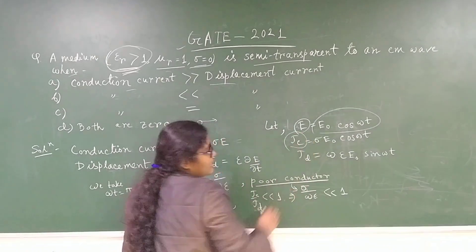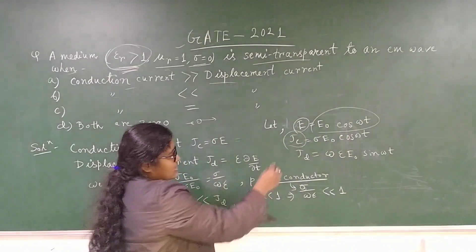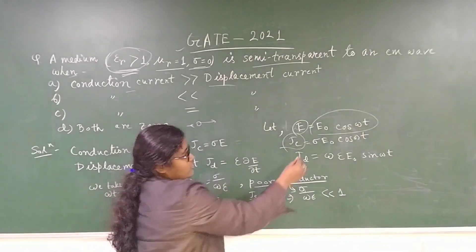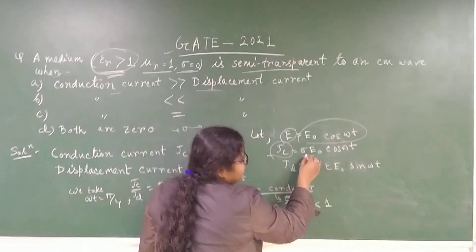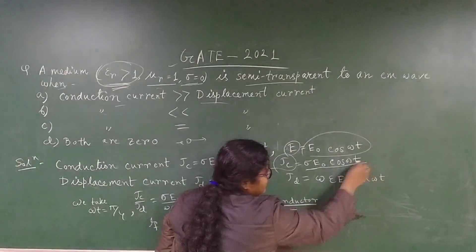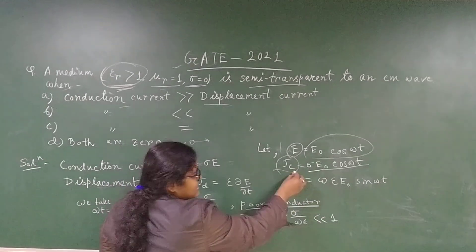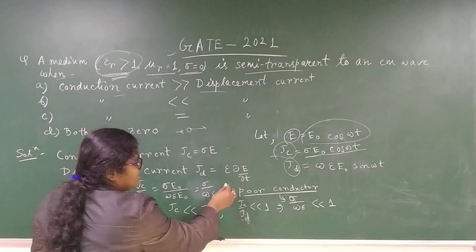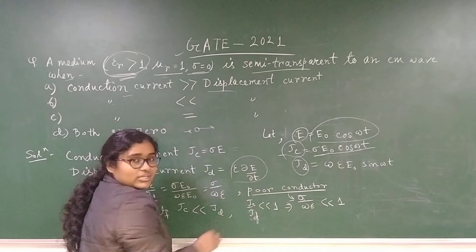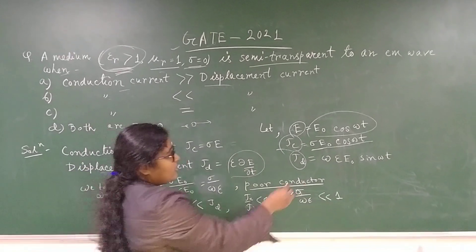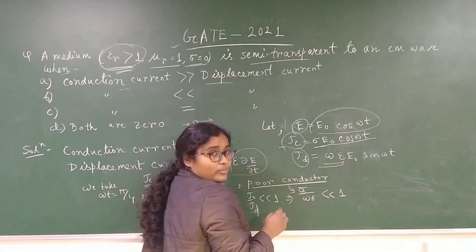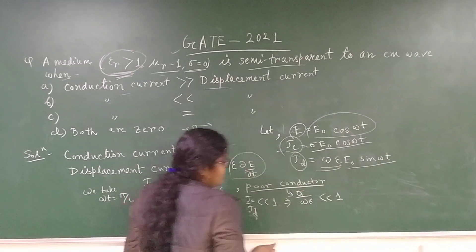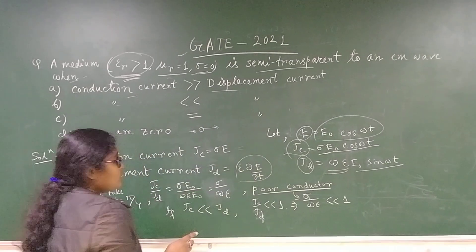Let us take the conduction current: J_c equals σ·E, which gives σ·E_naught cos(ωt). And J_d, the displacement current, is ε·(dE/dt), so ε·(dE/dt) becomes ω·ε·E_naught sin(ωt).